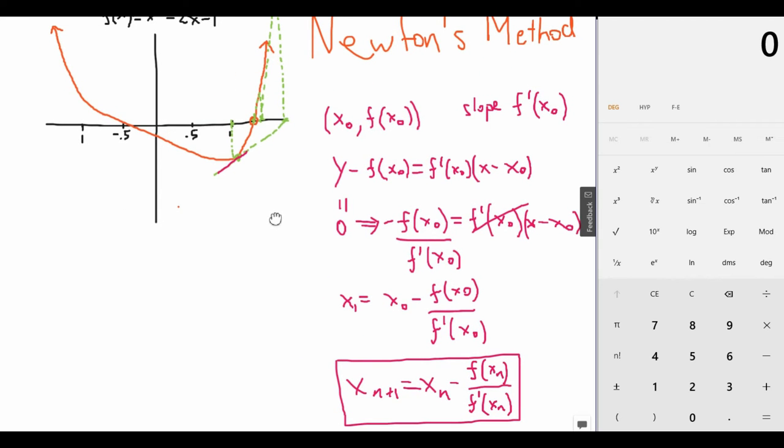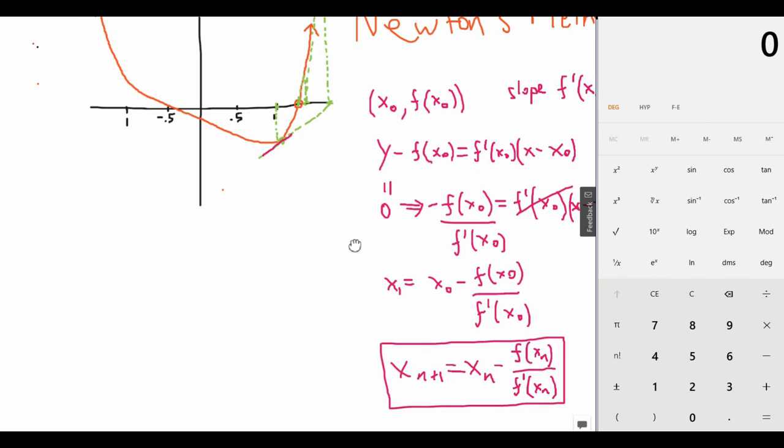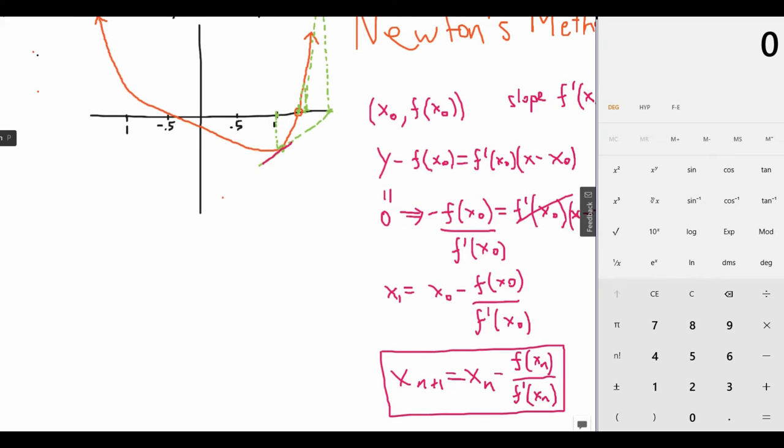So let's see how this actually works for this specific polynomial. We start with x_0. Let's use the same guess as before. Let's call x_0 equal to 1. So x_0 equals 1. And now we need to find f and f'. Well, f(x) is just x to the power of 6 minus 2x minus 1.